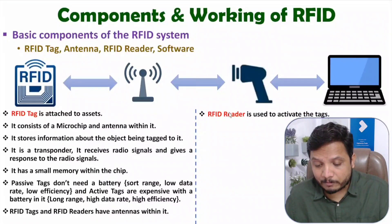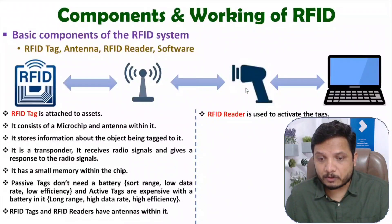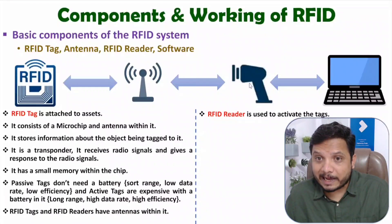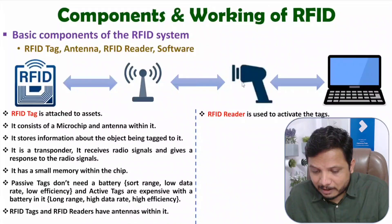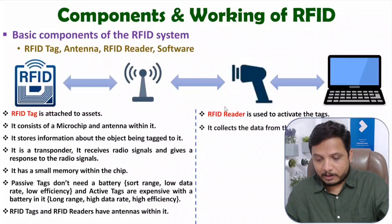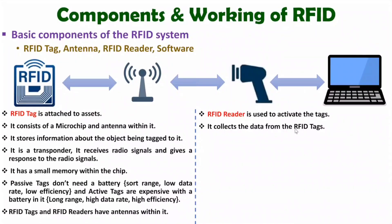Now let us discuss the RFID reader. The RFID reader is used to activate the tags. Once activation is done, the reader can detect the tags — indirectly, the reader can track and identify the objects. It collects data from RFID tags by sending electromagnetic signals first. Once those signals are received by the RFID tag, the tag gives a response, and based on the response the reader tracks and identifies the object. The RFID reader has a scanning antenna, which scans the RFID tags, tracks them, and identifies them.